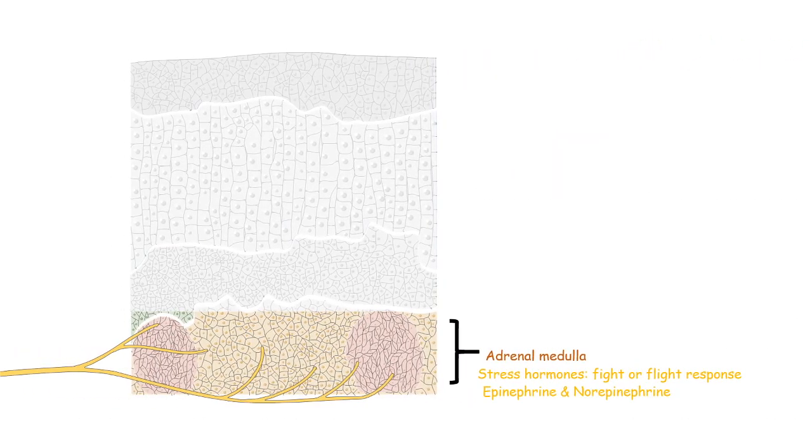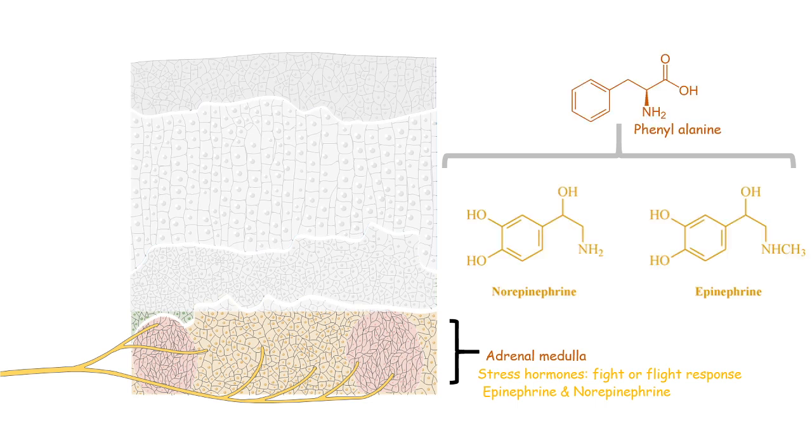Let's come to the adrenal medulla hormones. Adrenal medulla hormones are key category of stress hormones, meaning they help our body in times of fight or flight response. Epinephrine and norepinephrine are the key hormones secreted from the adrenal medulla. Chemically, both these hormones are known as catecholamines. These are derivatives of phenylalanine. These hormones are secreted by nerve terminals in the adrenal medulla.